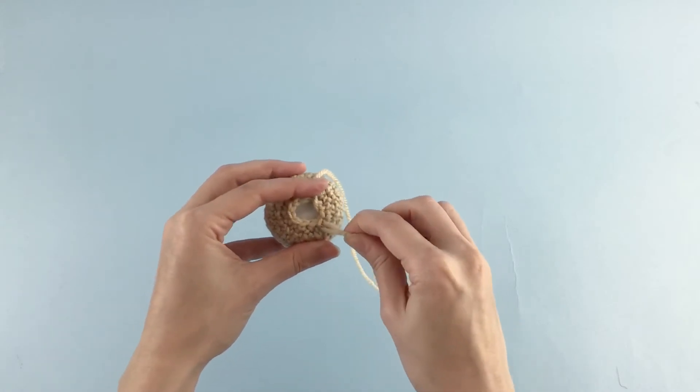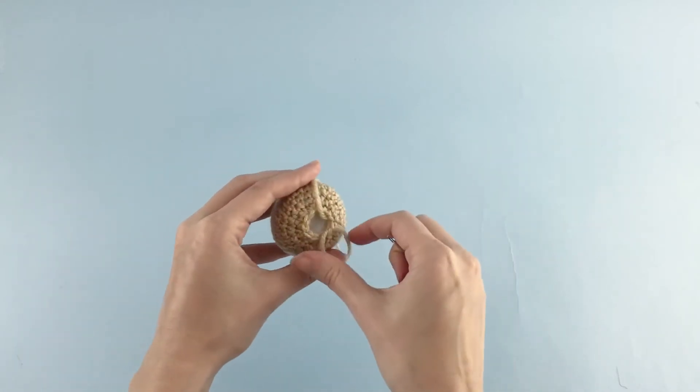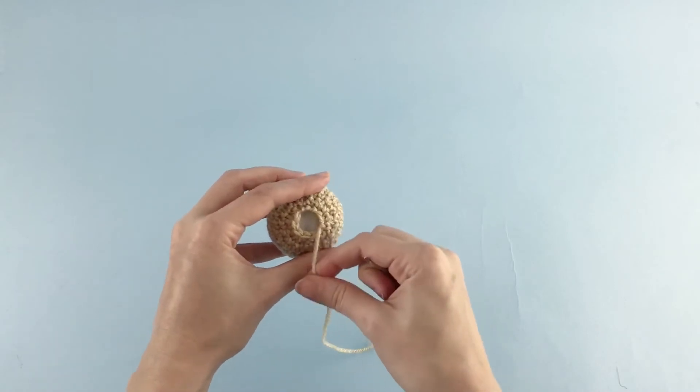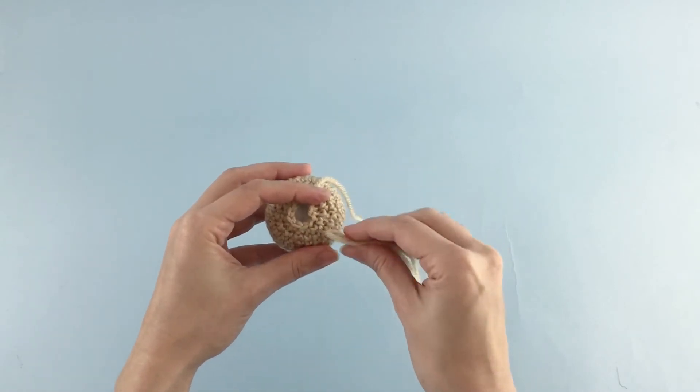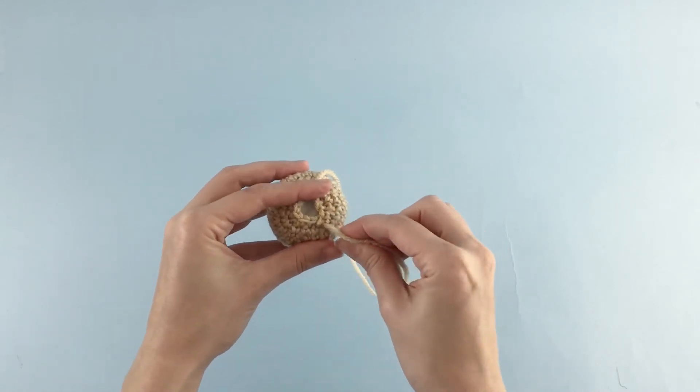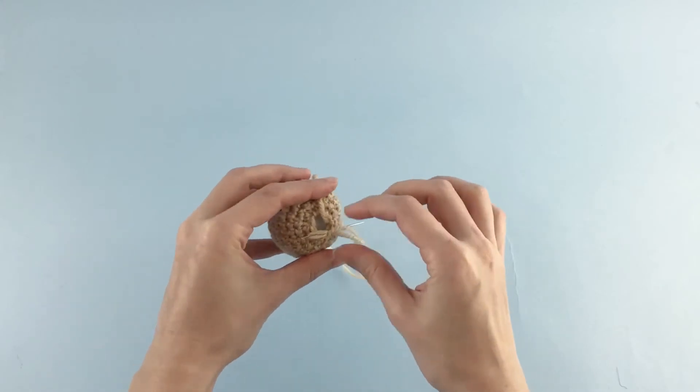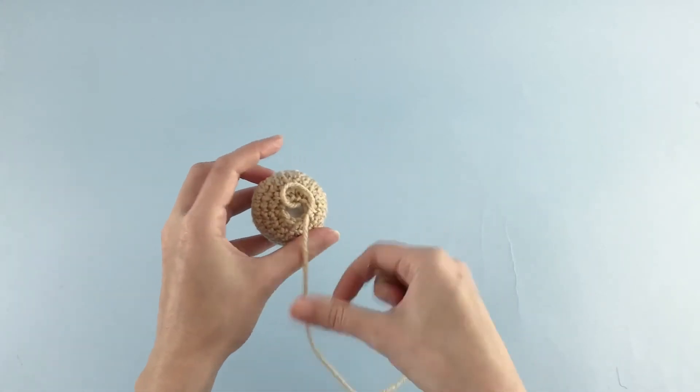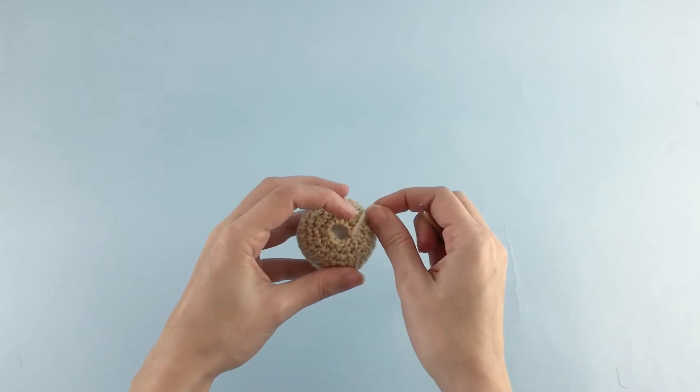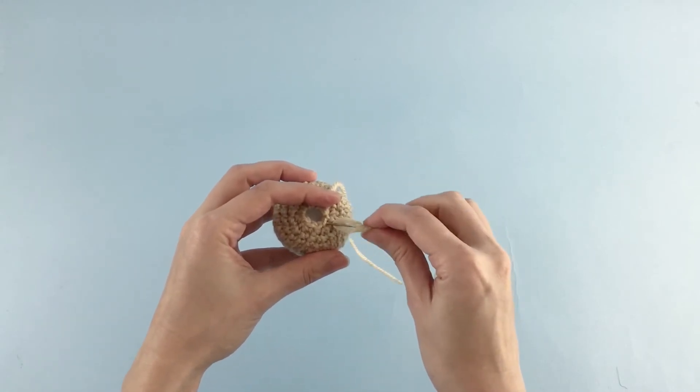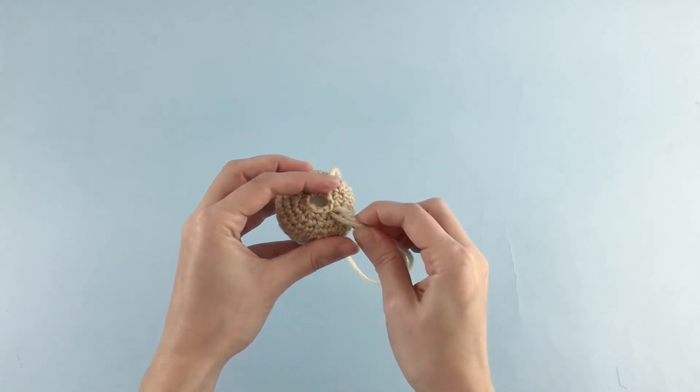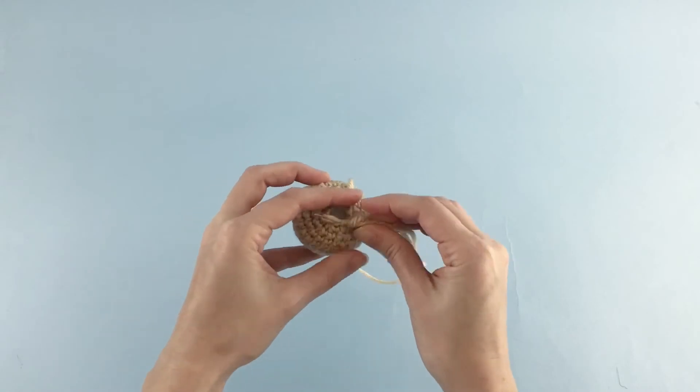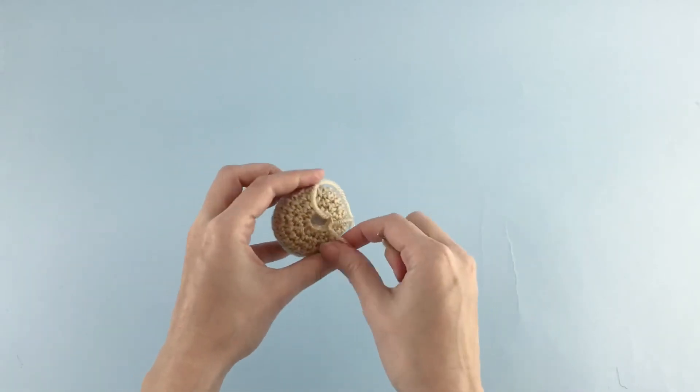What I'm doing here now is inserting the needle two by two stitches. So I grab the front loop of one stitch, the front loop of the second stitch, pull the yarn and do the same again. So I'll be doing this six times, right? Because I have 12 stitches. So two by two I will do it six times.